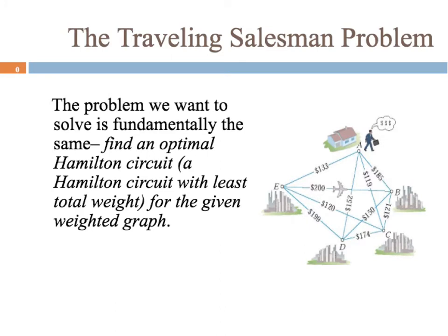What we want to figure out for these types of problems is an optimal Hamilton circuit — optimal meaning best value. We want it to be the cheapest total after our complete trip around the graph.